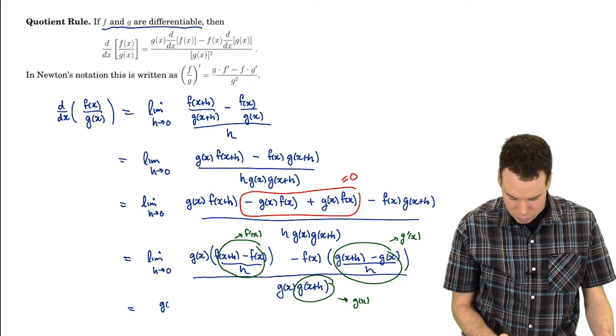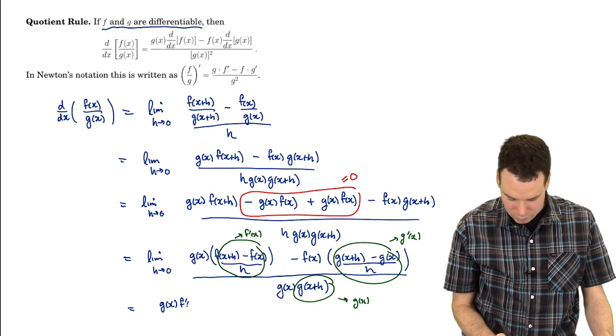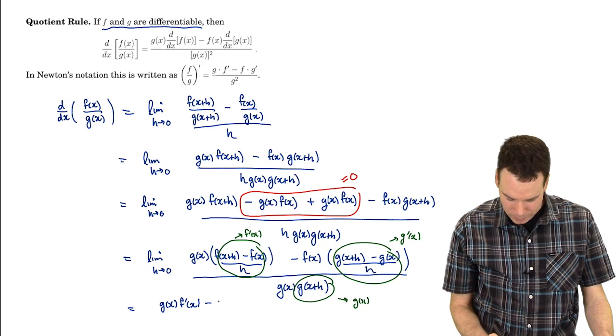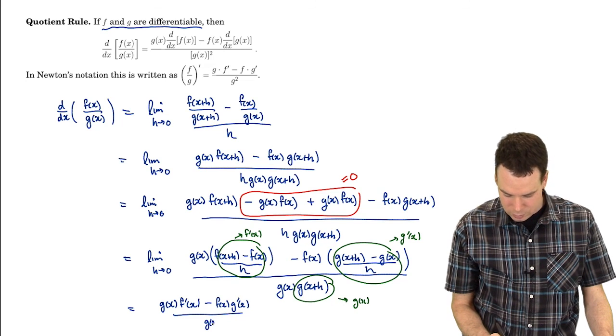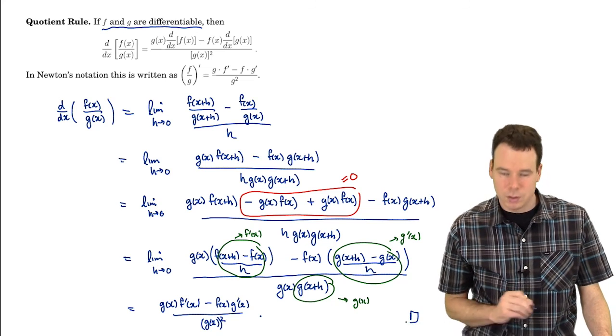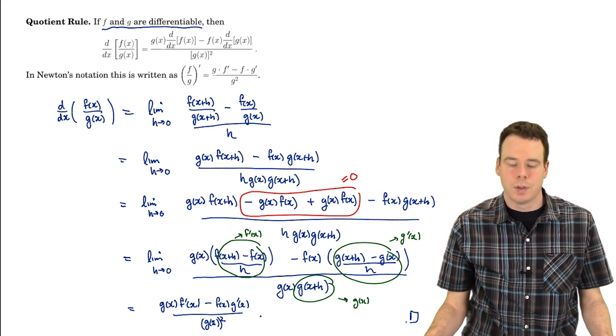In the limit we get that it's g of x times f prime of x minus f of x times g prime of x all over g of x squared. And so there is our proof of the quotient rule from the definition of derivative.